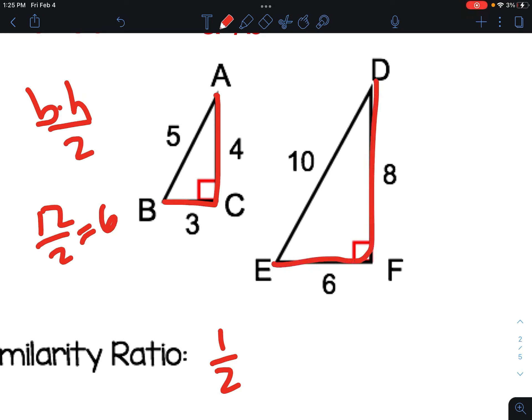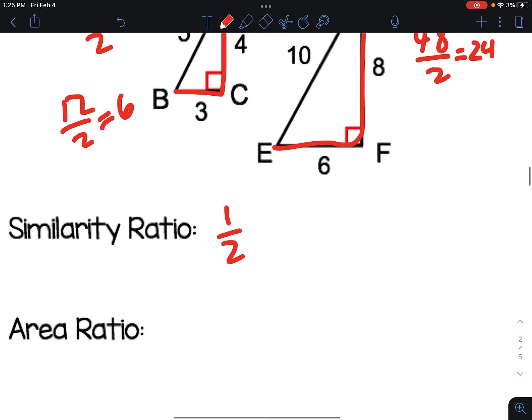6 times 8 is 48, 48 cut in half is 24. So the ratio of the areas would be 6 to 24, which if you reduce that down is a fourth.